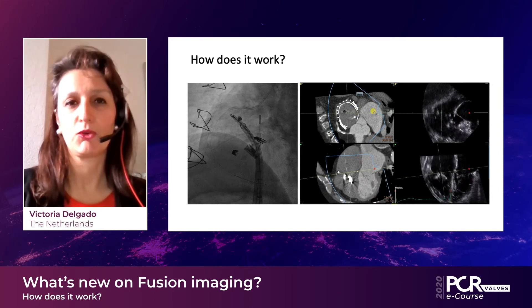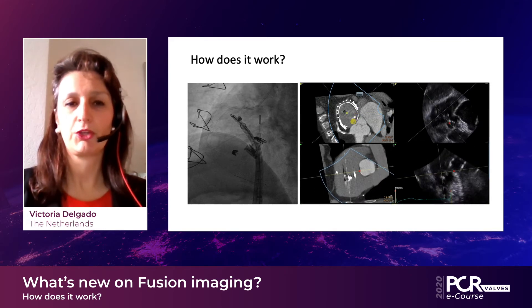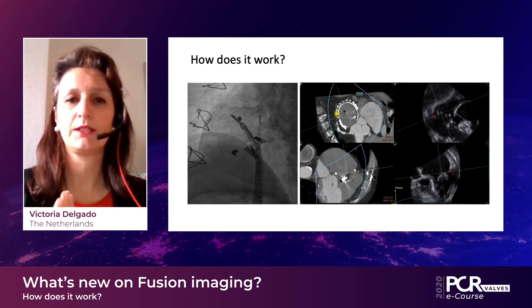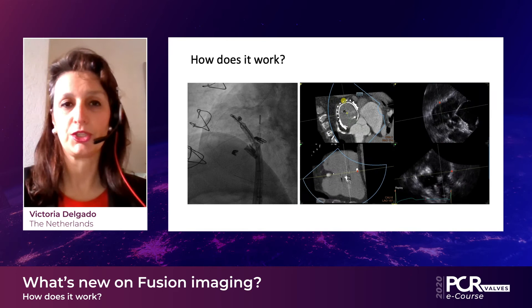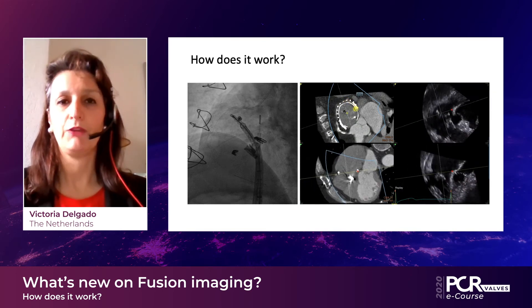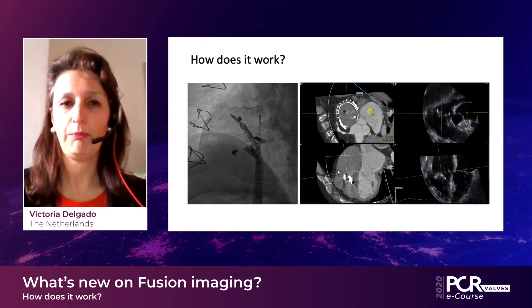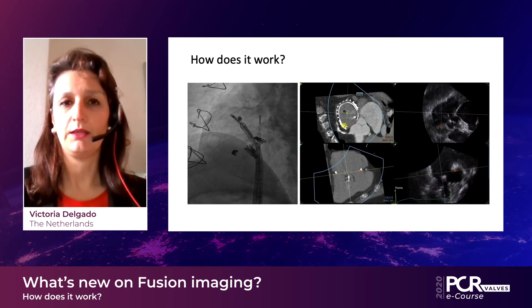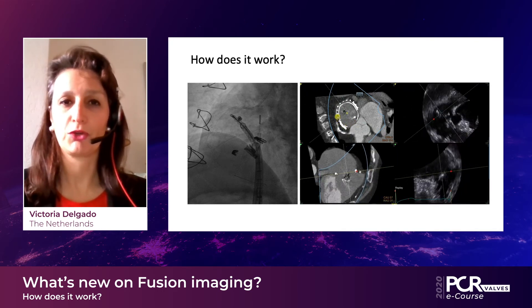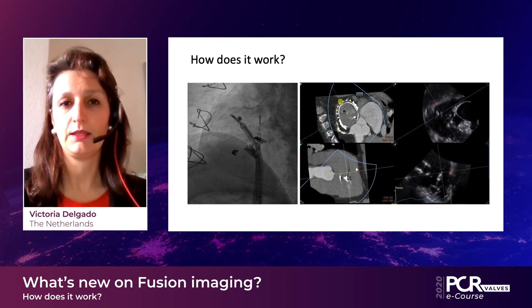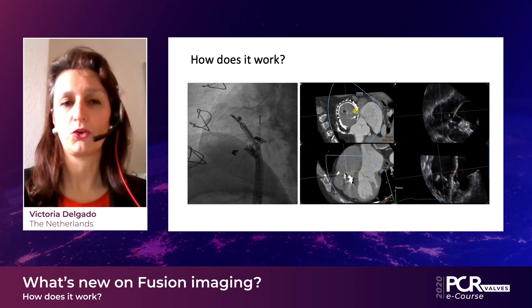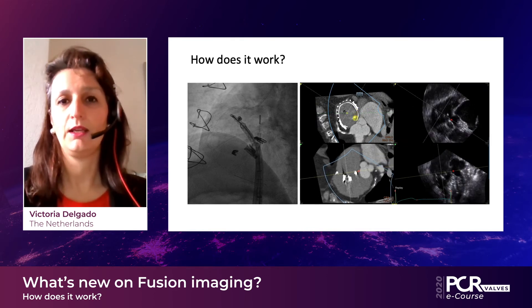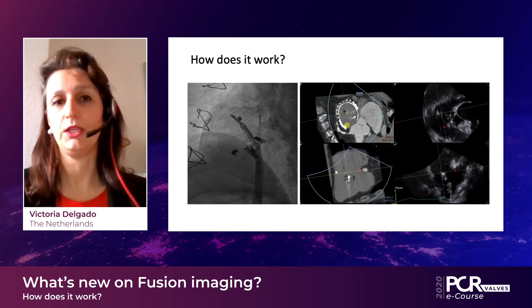For a transcatheter tricuspid valve intervention — annuloplasty, for example — the interventionalist introduces a wire in the right coronary artery as a reference for the intervention, which is the structure close to the tricuspid annulus. If we use the CT data with the procedural planning already in place, as you can see in this figure, we can superimpose that image to echocardiography and manipulate the transesophageal planes or CT planes to constantly see where the device is and which is the landmark reference on CT and echocardiography.